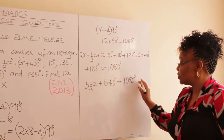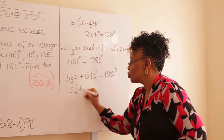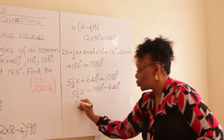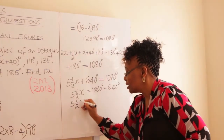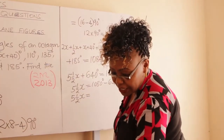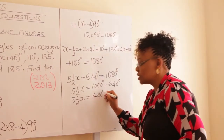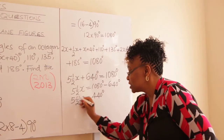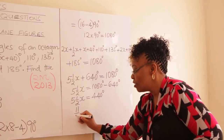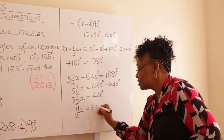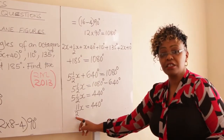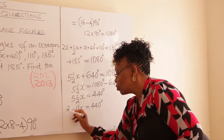Take 640 to the other side: 5 and a half x = 1080° − 640° = 440°. Express 5 and a half as an improper fraction: 11 over 2. So (11/2)x = 440°.